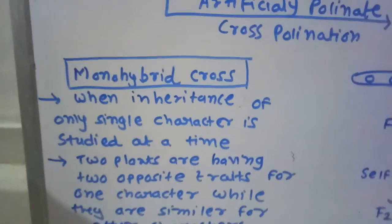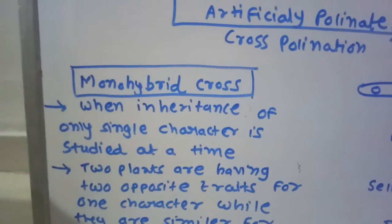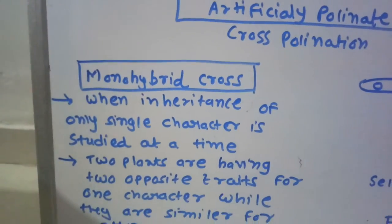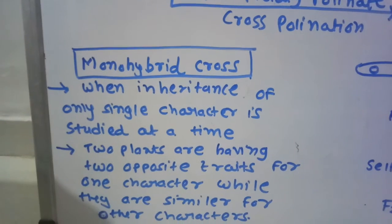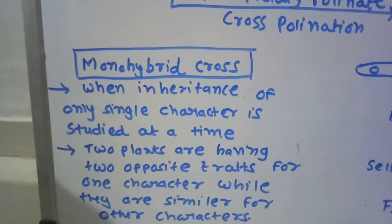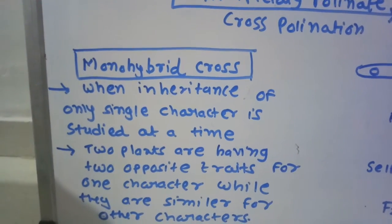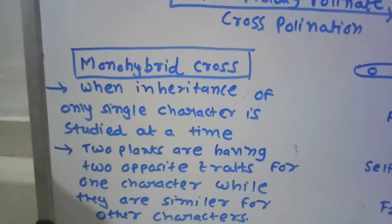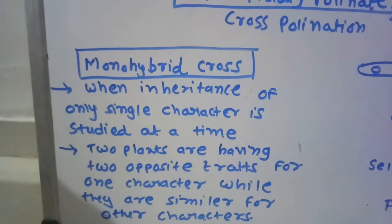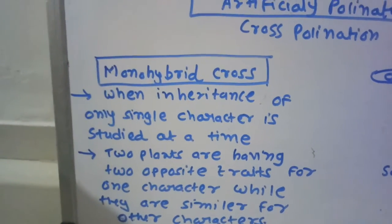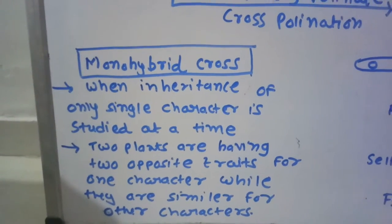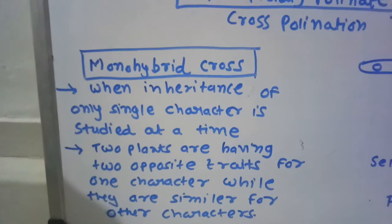In the last lecture, we studied that Mendel observed seven different characters in a garden pea plant. For each character, he studied two opposing traits, so in all he studied 14 opposing traits in a garden pea plant.